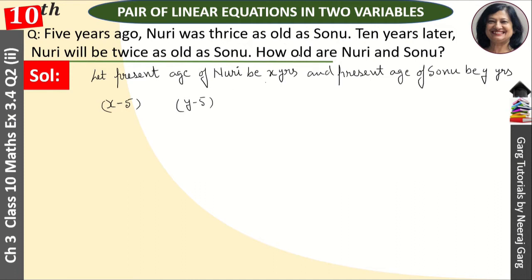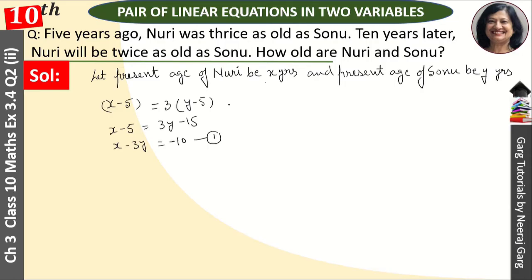Since Nuri was thrice as old as Sonu, we multiply Sonu's age by 3 and set them equal. So X minus 5 equals 3 times (Y minus 5), which gives X minus 5 equals 3Y minus 15, and simplifying: X minus 3Y equals minus 10. This is our first equation.